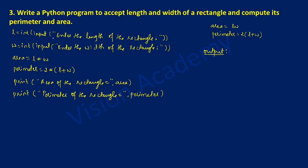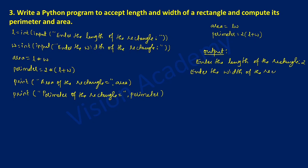Once we execute this program it will ask the user to enter the length of the rectangle. For example, I am going to enter 2. After that it will ask the user to enter the width of the rectangle. I am going to type 3 and press Enter. Now it is going to calculate area and perimeter. Area can be calculated as 2 times 3.